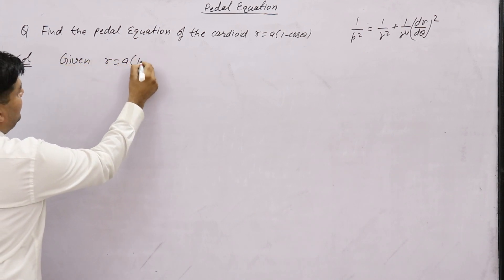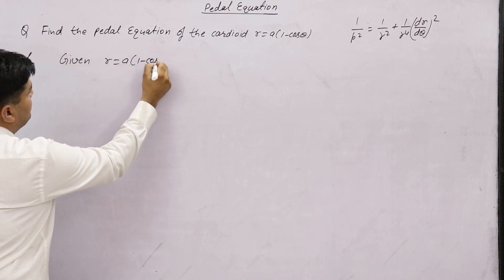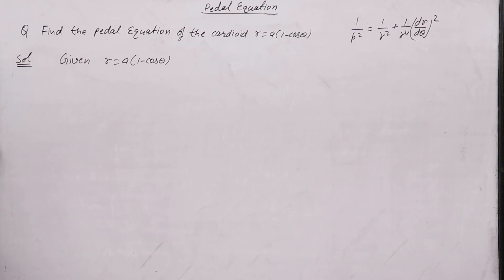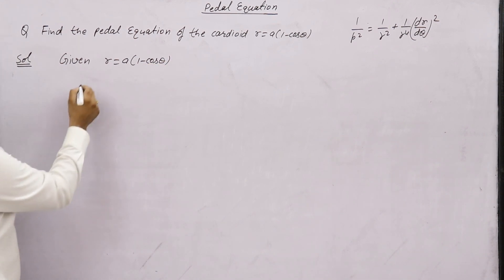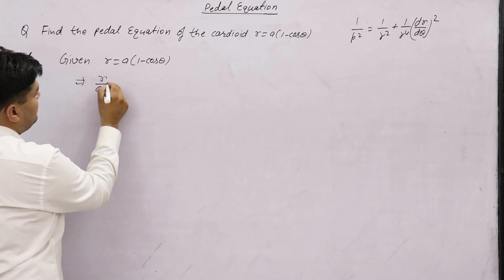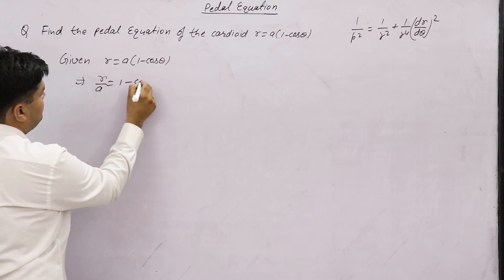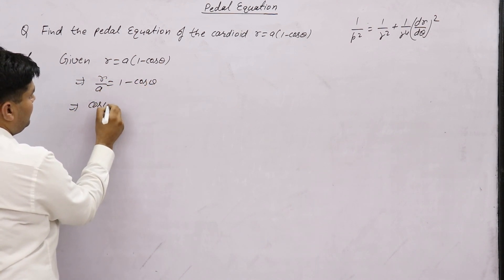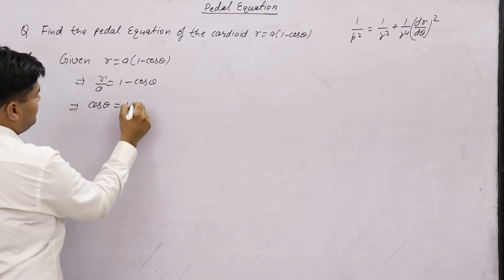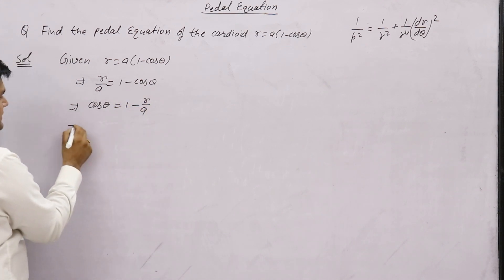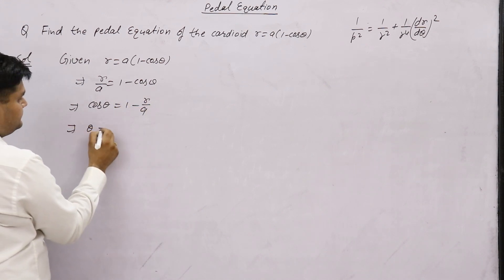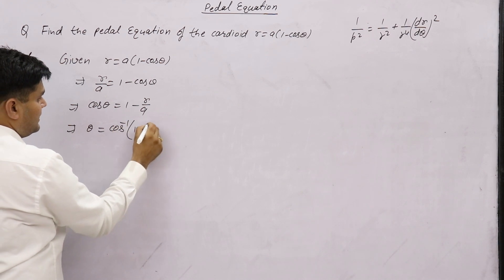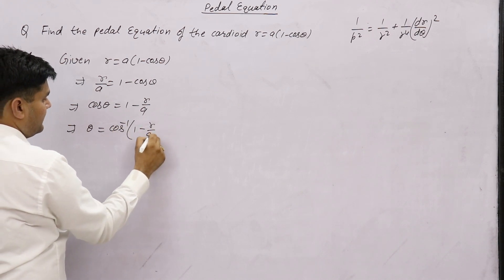Given: r = a(1 - cos θ). From here, θ can be found easily. So solving: r/a = 1 - cos θ, which gives cos θ = 1 - r/a, and therefore θ = cos⁻¹(1 - r/a).